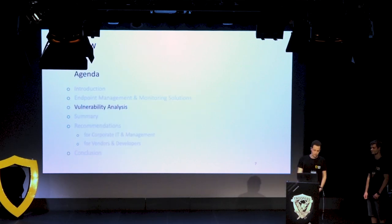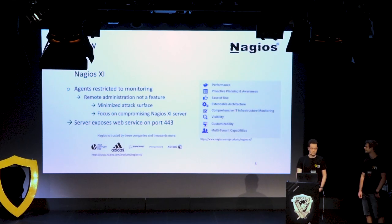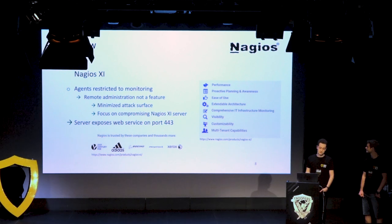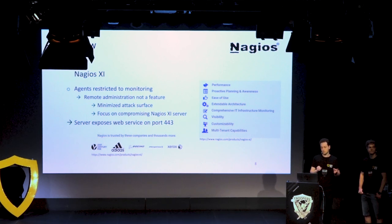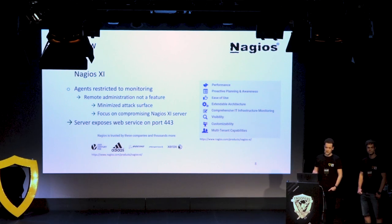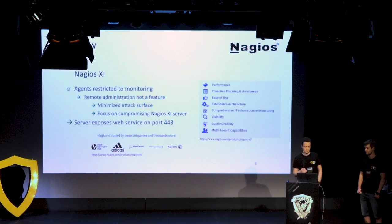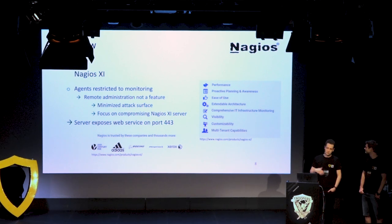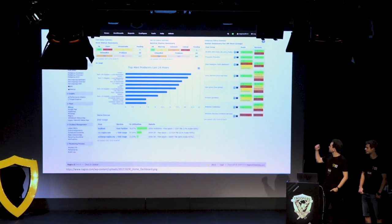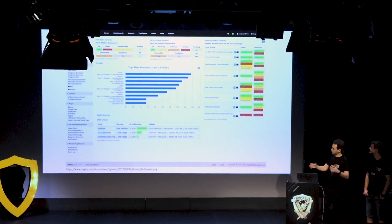Let's look at the technical part, the vulnerability analysis. First, we discuss Nagios XI. Nagios XI is a monitoring solution — you deploy agents on end-user systems and servers and get graphs showing performance, patch level, and so on. In default settings it's purely a monitoring solution with a minimized attack surface. We focused on compromising the central component, the Nagios XI server, which exposes a dashboard on port 443 where the administrator logs in and views system stats.